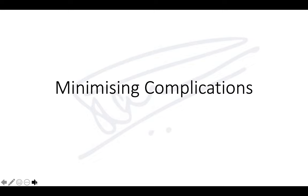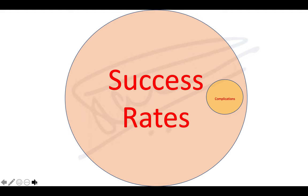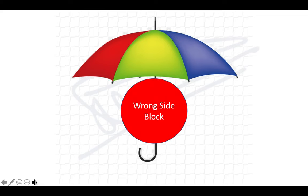So how do you minimize your complications? You start with a low success rate and high complications, and you want to increase your success rate and reduce your complications. The more blocks you do, the more your success rate will go up and your complication rate will come down. Some complications are common to all nerve blocks.